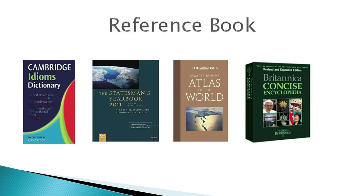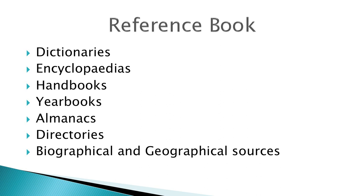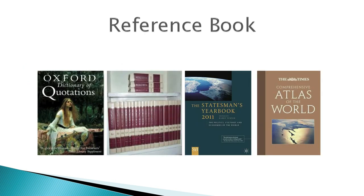Let us now discuss reference books. A reference book provides answers to brief factual queries, statistical information, background information, or directs the user to additional information sources. It is a book meant only to be consulted for some specific piece of information and is not meant for continuous reading. Reference books include dictionaries, encyclopedias, handbooks, yearbooks, almanacs, directories, and biographical and geographical sources. Examples are the Oxford Dictionary of Quotations, the World Book Encyclopedia, the Statesman's Yearbook, and the World Book Atlas.